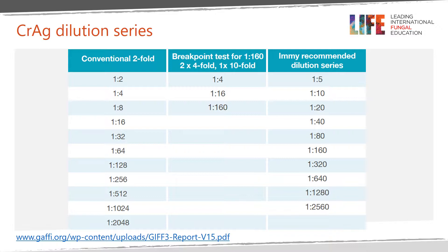CRAG dilution series. Generating the most useful quantitative data of CRAG titer is not yet standardized. This table illustrates some options for dilution series. On the left is the conventional method of two-fold titers. On the right is the IMME recommended dilution series for the lateral flow assay. In the center is an example of a dilution series where using a threshold of 1 to 160 would minimize the need for multiple dilutions. We will shortly review the data behind this clinically valuable threshold of 1 to 160 to guide management.